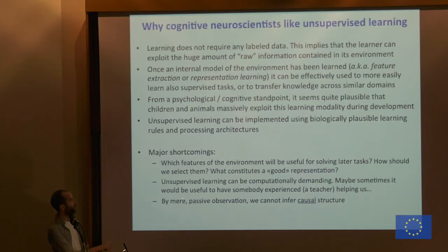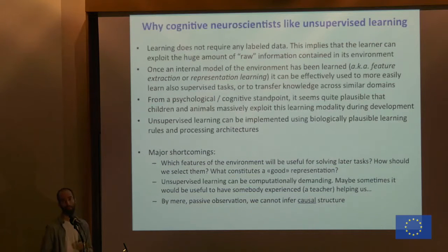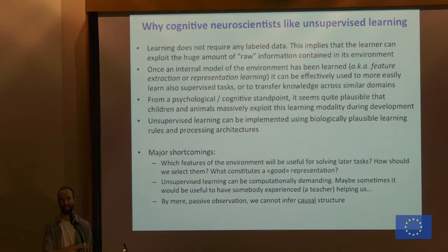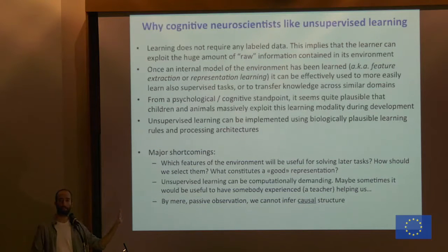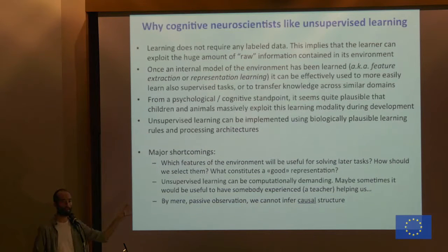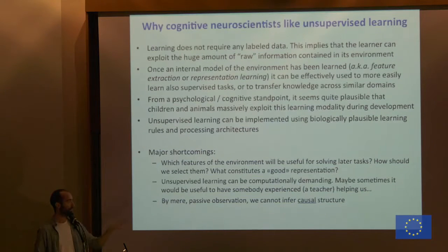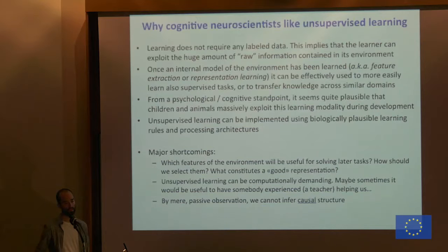Another big limitation: by just observing, we cannot infer causal structure. By only observing, we cannot establish if something is likely to be the cause or the effect of something else. You need to interact with the perceptual environment to establish causal structure — something connected to Bayesian causal models.